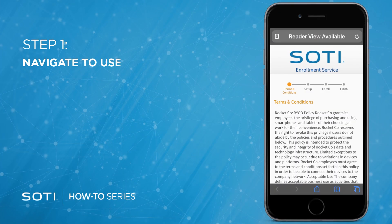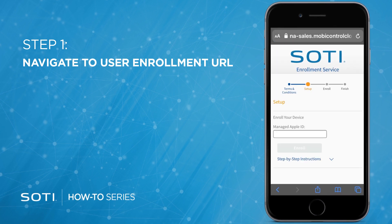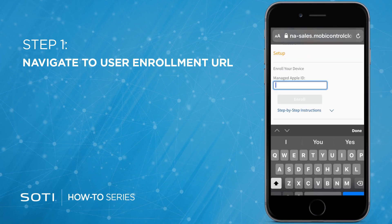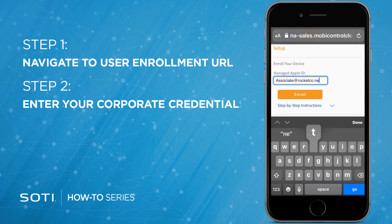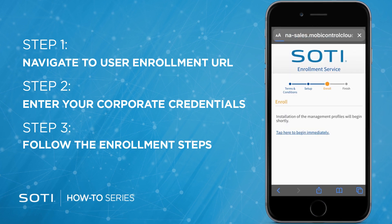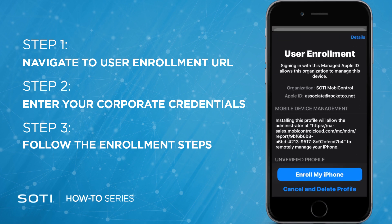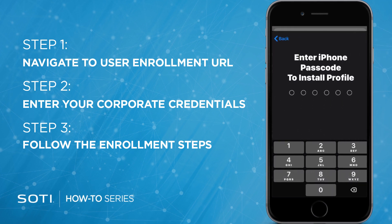Employees who want to enroll their personal Apple devices into SOTY MobiControl using user enrollment can do so in three easy steps. Step 1: Using Safari, navigate to the user enrollment URL provided by your IT administrator. Step 2: Enter your corporate credentials. And step 3: Follow the requested enrollment steps on your device to complete enrollment. Remember, enrollment may take a few minutes to complete.